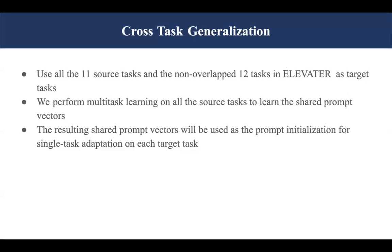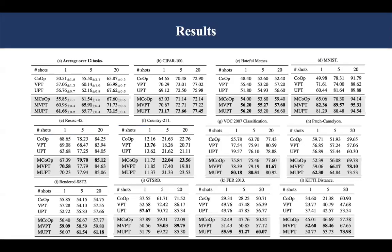For single-task adaptation, we perform cross-task generalization. We use 11 source tasks to do prompt initialization, then single adapt on 12 non-overlapping tasks. The results show the effectiveness of multi-task initialization with single-task adaptation for 1, 5, and 20-shot experiments.